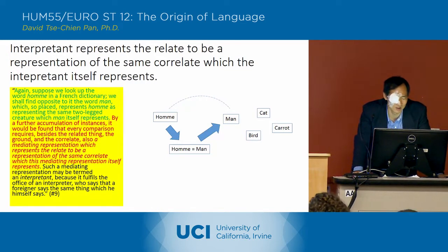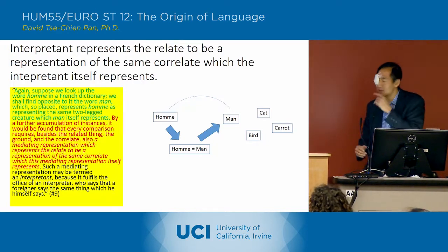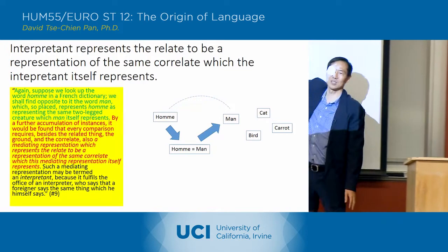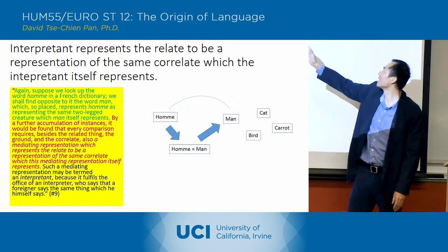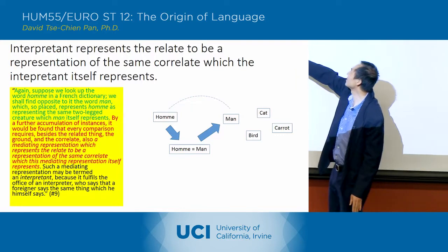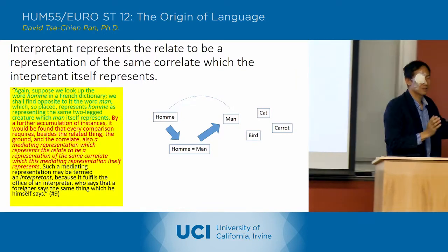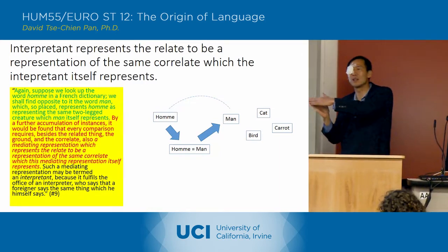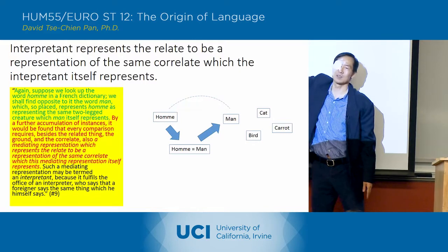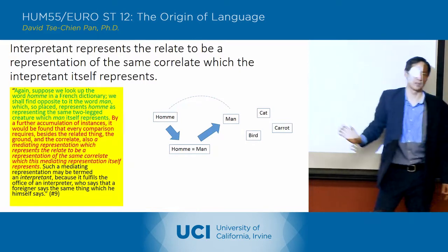I know this is a little difficult, but basically what he's saying is that this mediating representation — which is sort of the dictionary entry, 'homme' equals 'man' — is creating the relationship to 'man', and it's really the same relationship that 'homme' has to 'man'. So it's kind of both of them have to be pointing in that same way, but this is the one that kind of creates the basis for that pointing.